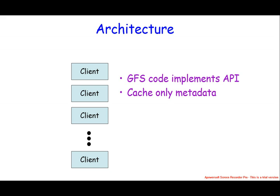Chunk servers have their own Linux cache, so data is inherently cached at that level. That basically covers the architecture discussion. We will then move to the statistics part.